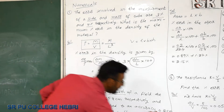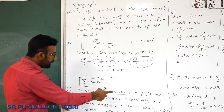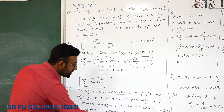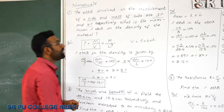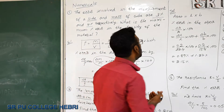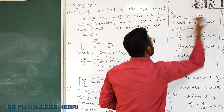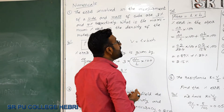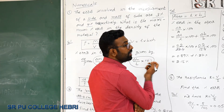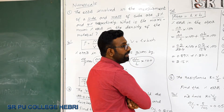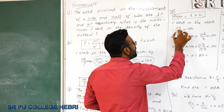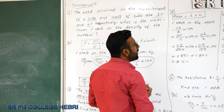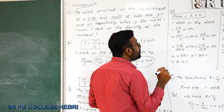Both values are measured to an accuracy of 0.2 cm. You are asked to find the percentage error in the area of the field. Area = length × breadth. The percentage error in area, Δa/a × 100, is the sum of the percentage errors in length and breadth.